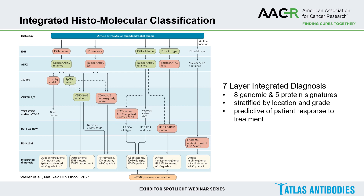This classification has continued to evolve up to today with the latest classification of CNS tumors in 2021, now a seven-layer integrated diagnosis comprised of eight genomic and five protein signatures, each stratified by location and predictive of patient response to treatment. IDH and ATRX still remain the two gatekeepers of this classification that we use today.